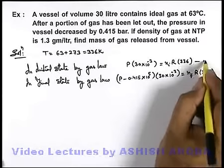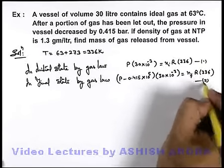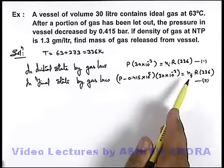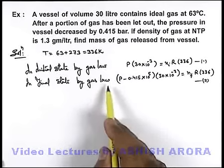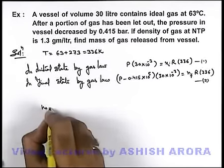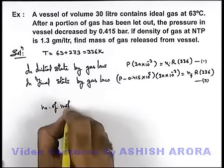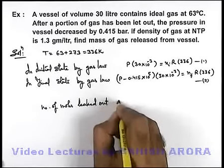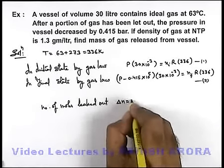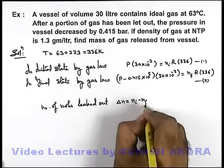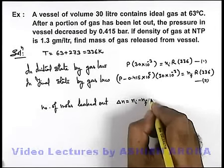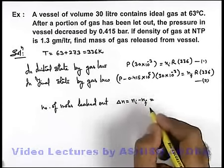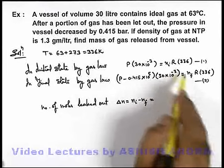From these equations, this is equation 1, this is equation 2. If we subtract the two we'll get the number of moles which are leaked out. Number of moles leaked out can be written as delta n, which is n_i minus n_f. Here this n_i minus n_f can be easily obtained by subtracting the two equations.